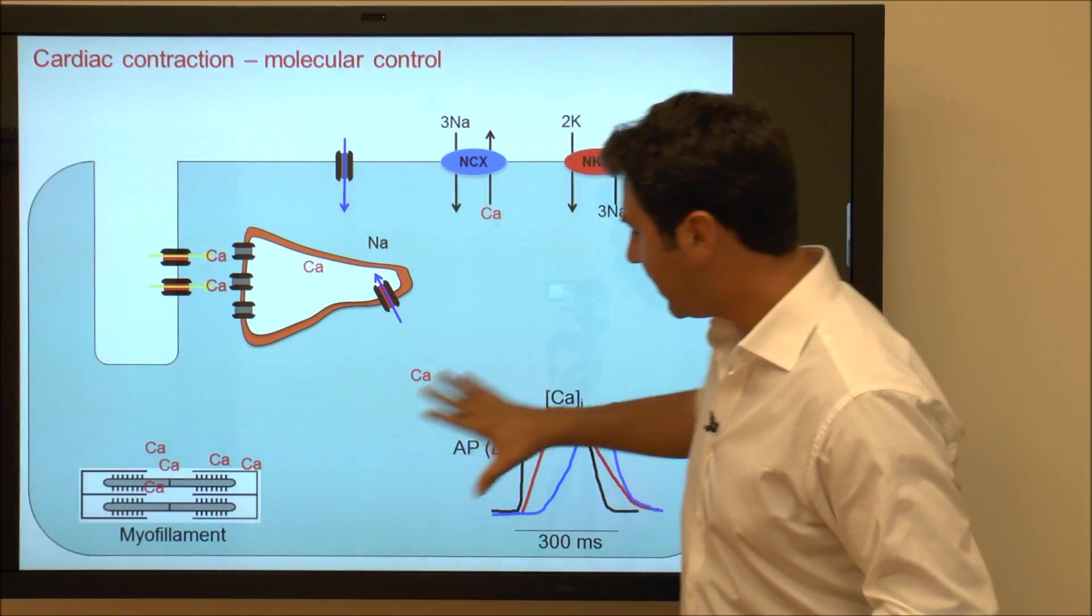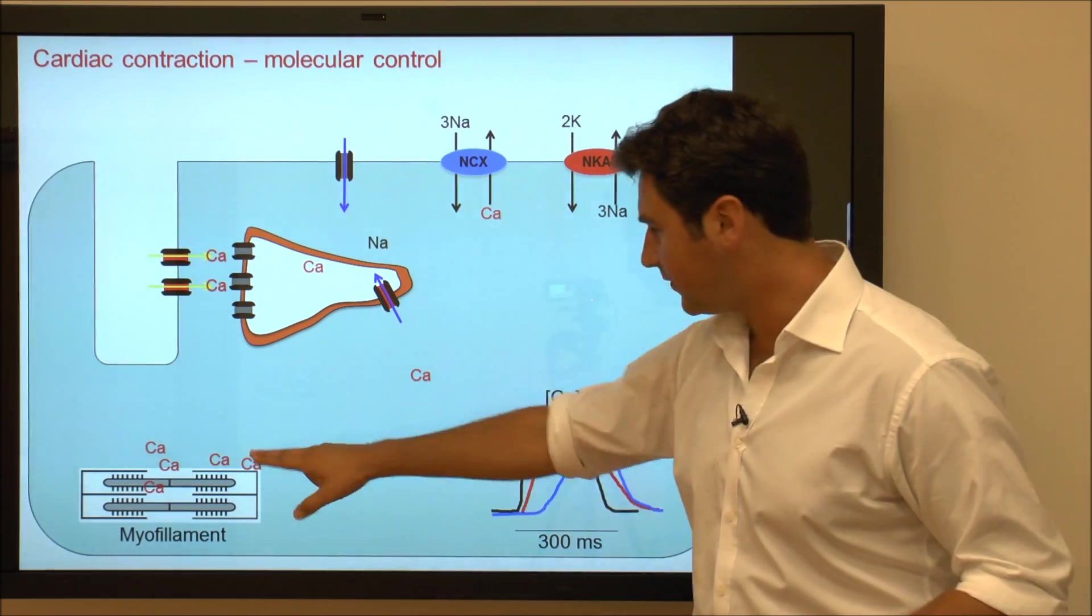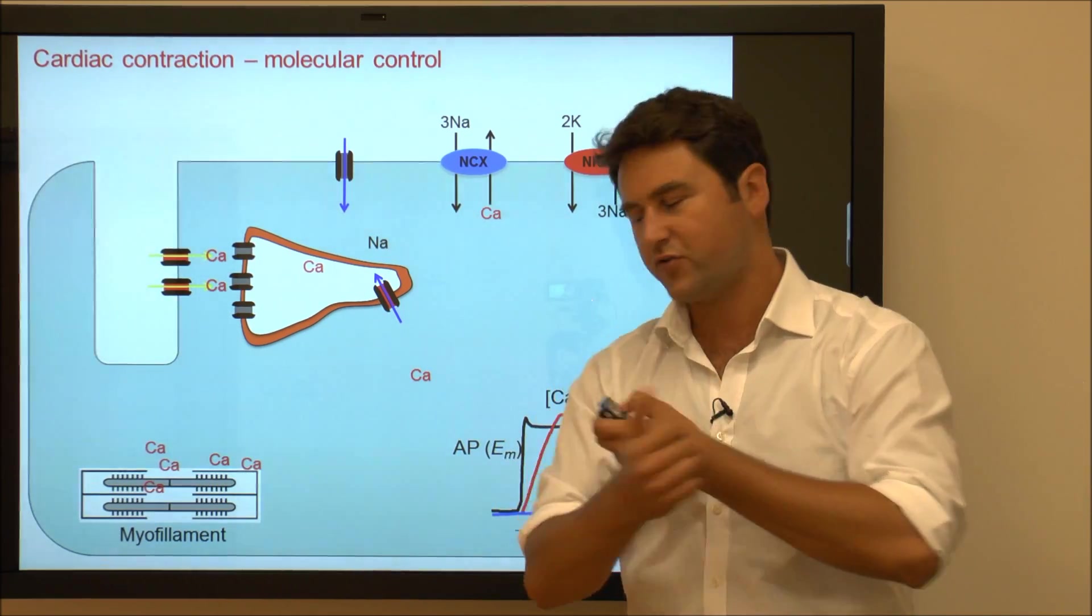They will flood the cell with calcium. Most of the calcium will bind to the myofilaments, and when the myofilaments bind calcium they will slide across causing a contraction.